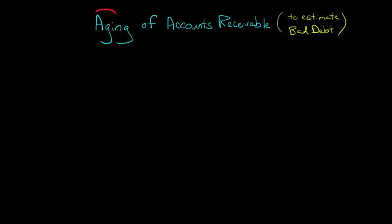In this video, we're going to talk about the aging method for accounts receivable that's used when you want to estimate bad debt. The easiest way to come up with a bad debt expense is basically just the percentage of sales method. You just look at the sales and say, okay, 3% is uncollectible, and then you've got your journal entry.